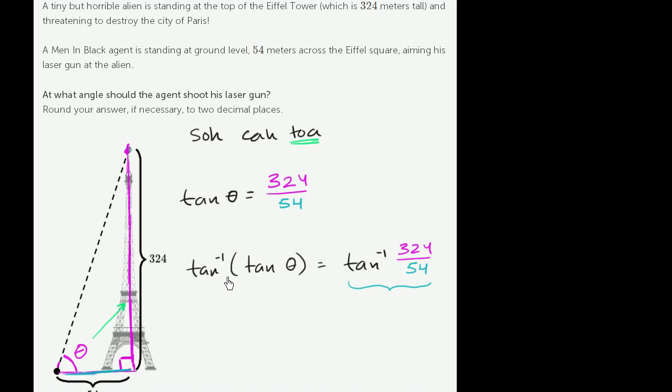This says, what is the angle that when I take the tangent of it, gives me tangent of theta? So this right over here just simplifies to theta. Theta is the angle that when you get the tangent of it, gets you tangent of theta.